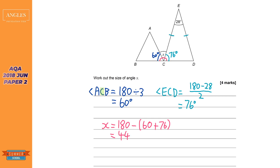Something we should have done throughout this question is written down the reasons. Even if the question doesn't explicitly say 'give reasons', you should get into the habit. For the first part: angles in a triangle add up to 180, in brackets equilateral triangle — that's why we divided by 3. For the second part: angles in a triangle add up to 180, divided by 2 because isosceles triangle. And the last part: angles on a straight line add up to 180.